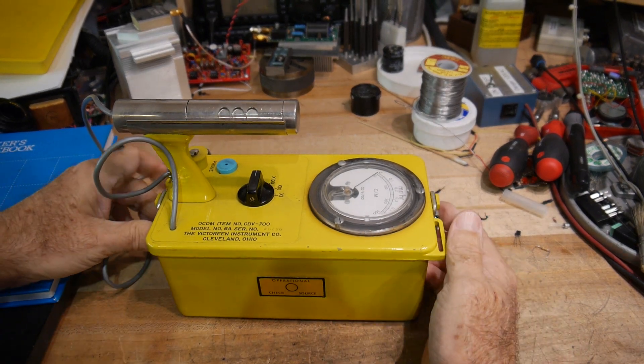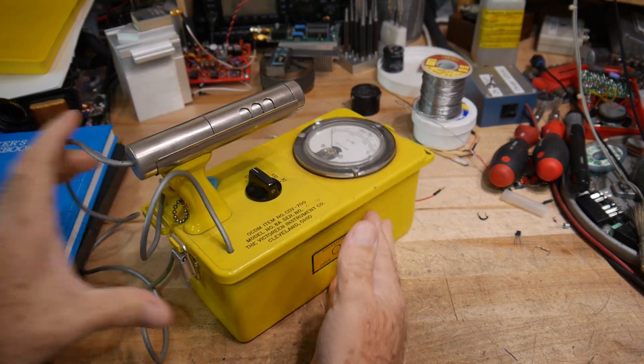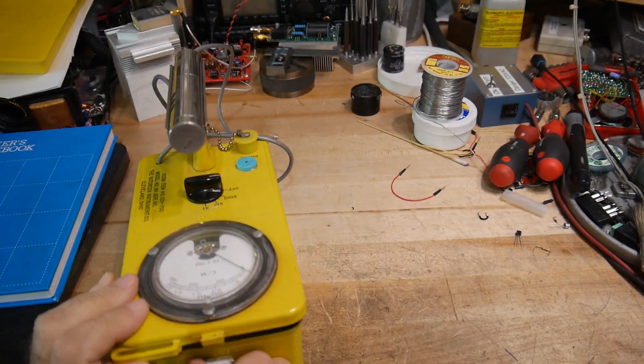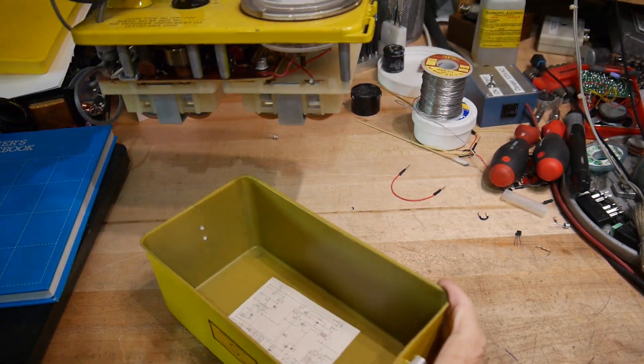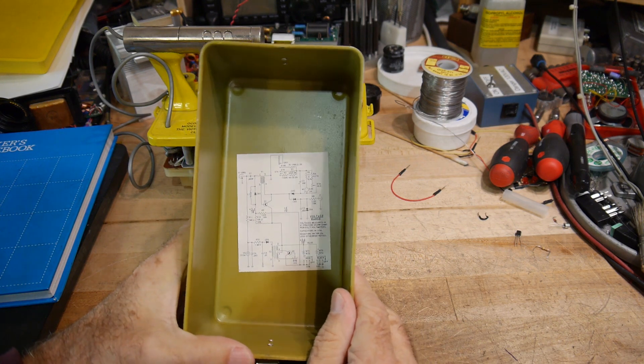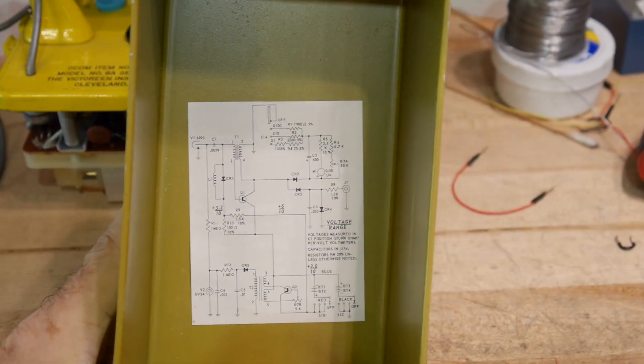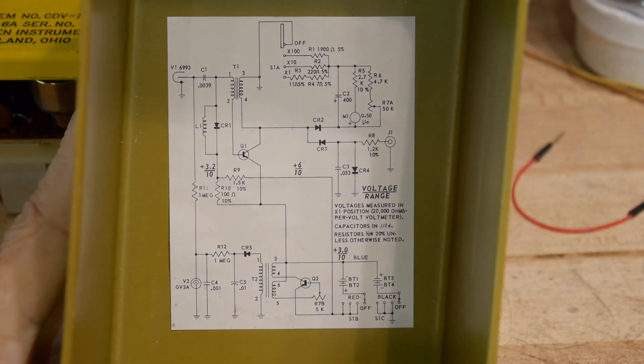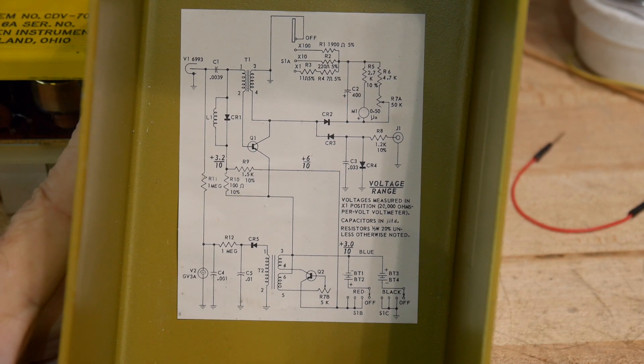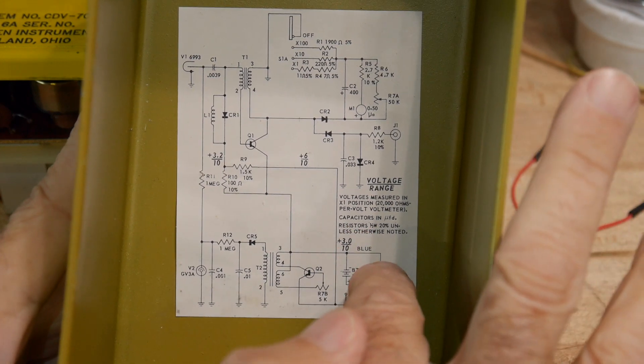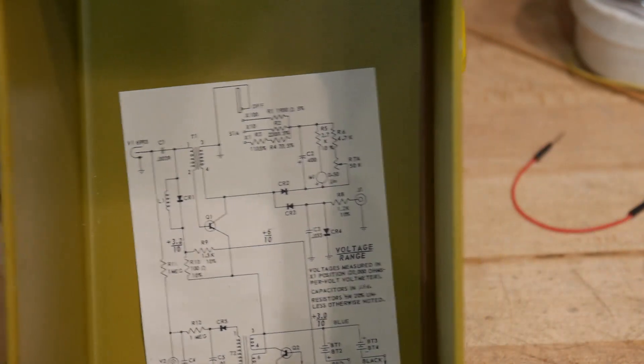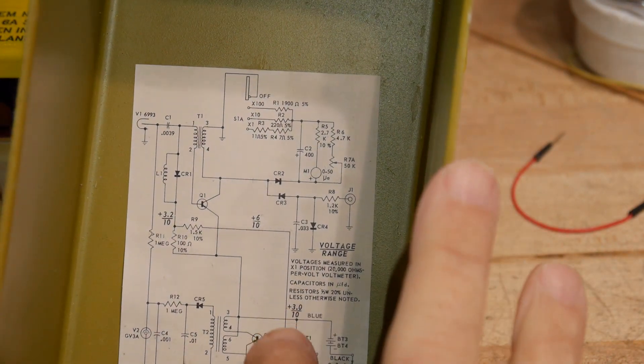All right. So, to take it apart, there's a latch on this side, a latch on this side, and you're in. That's all it takes. All right. And inside the case here is a schematic. Very nice. Let's zoom in on that. So, we have some batteries here. We have, looks like, three volts. There's four D-cells. Two in series, two in parallel. So, we have three volts.